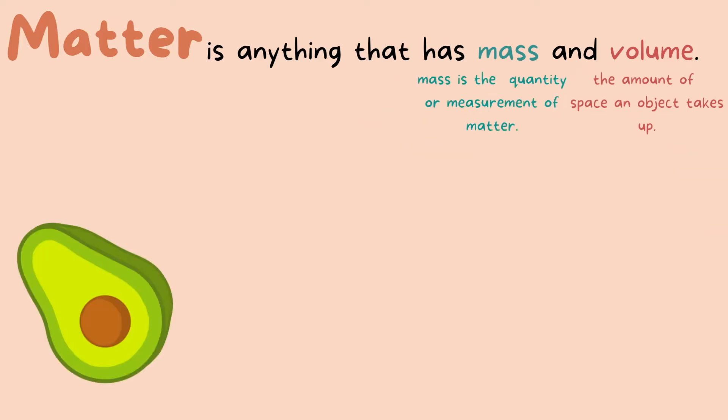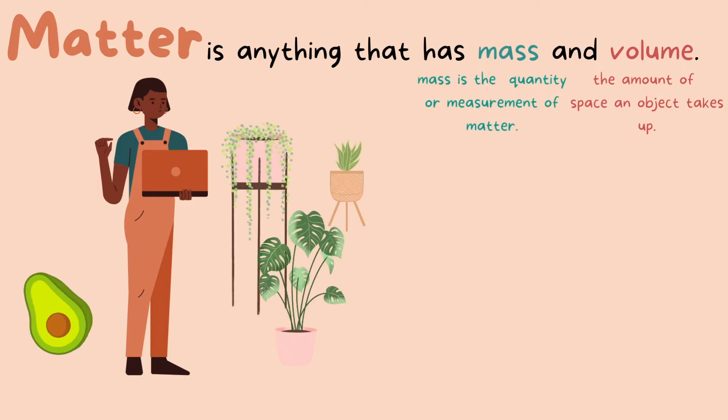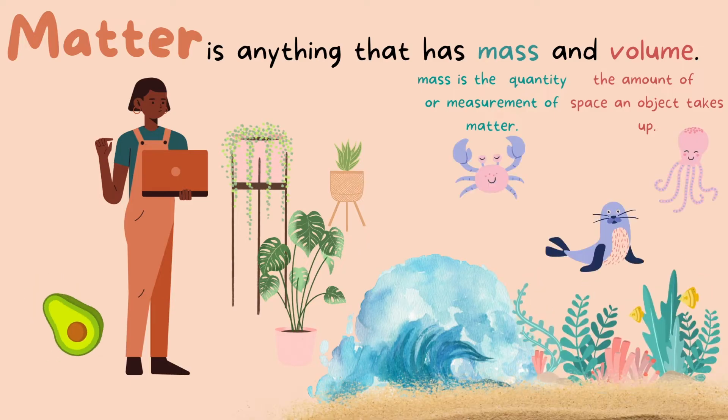For example, this avocado is considered matter because it has weight and takes up a certain amount of space. How about this girl and her laptop? Are they matter? Yes, the girl is made of matter, so is her laptop, and so is everything else attached to her. These plants are also made of matter. This ocean, the sand, and all the animals that are here, these are all made of matter.